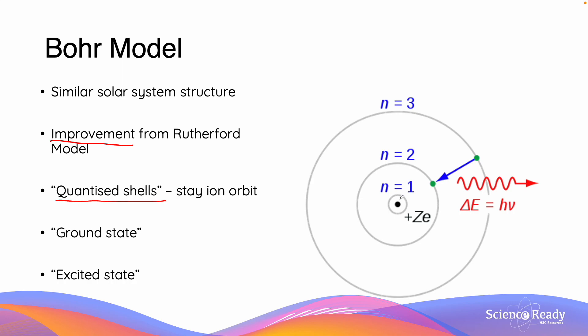So for example, if we have the shell n equals 1, maybe there might be a particular amount of energy, say x, that is required for an electron to be in that orbit. To be in n equals 2, maybe it needs a bit more energy than x, and n equals 3 may be a certain amount more than that too.